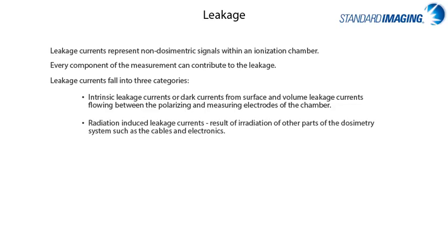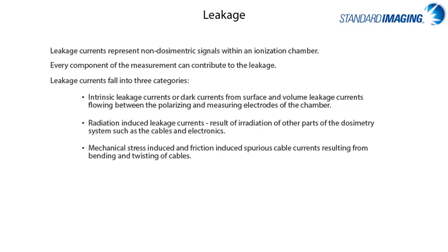The second category is radiation-induced leakage currents, which occur as a result of irradiation of other parts of the dosimetry system, such as cables and electronics. Finally, leakage can also be caused by mechanical stress-induced and friction-induced spurious cable currents resulting from bending and twisting of your cables.